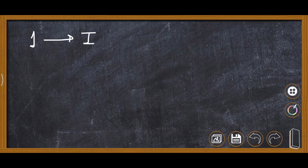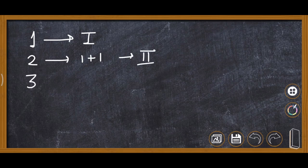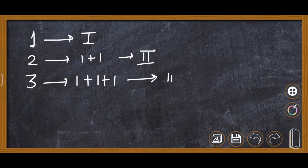1 we can write as I. 2 we can write as 1 plus 1, so it will be II. If we are writing 3, then 1 plus 1 plus 1, so it will become III.